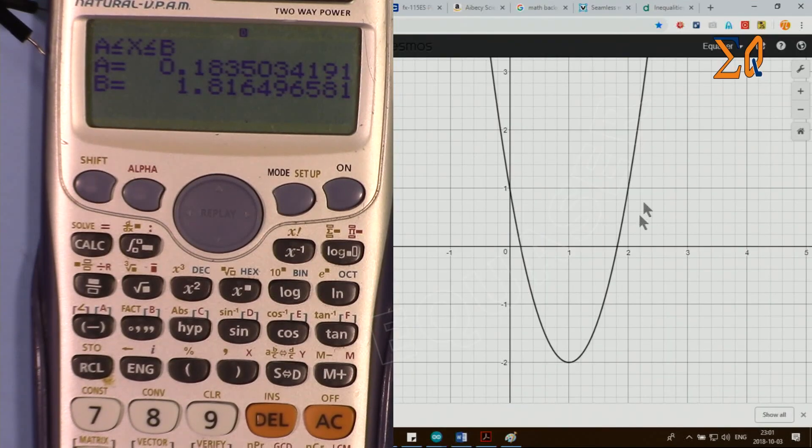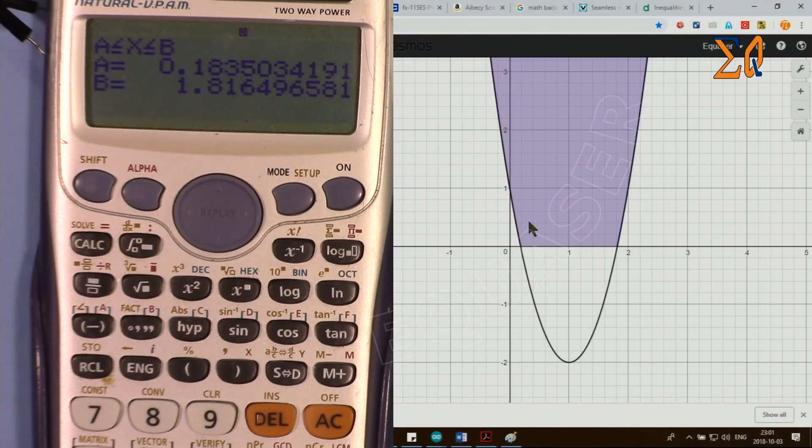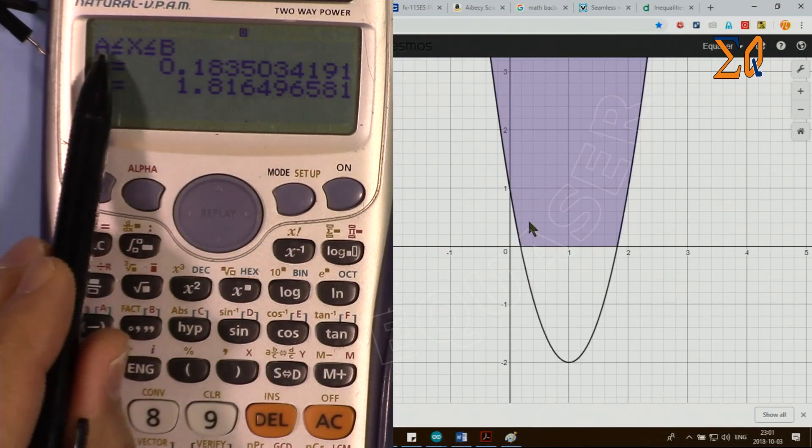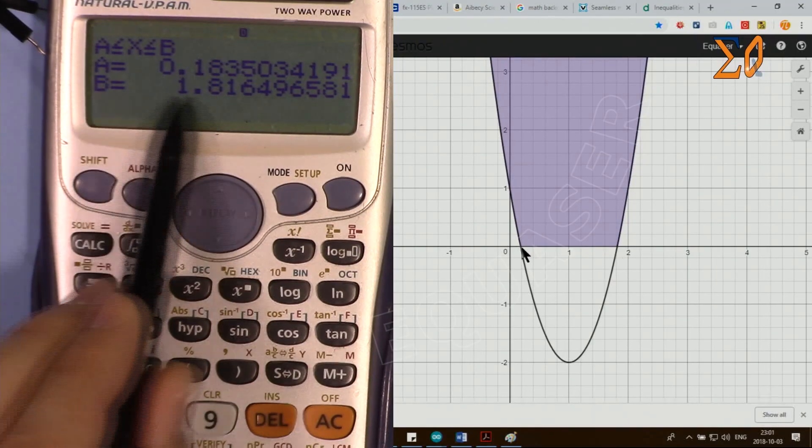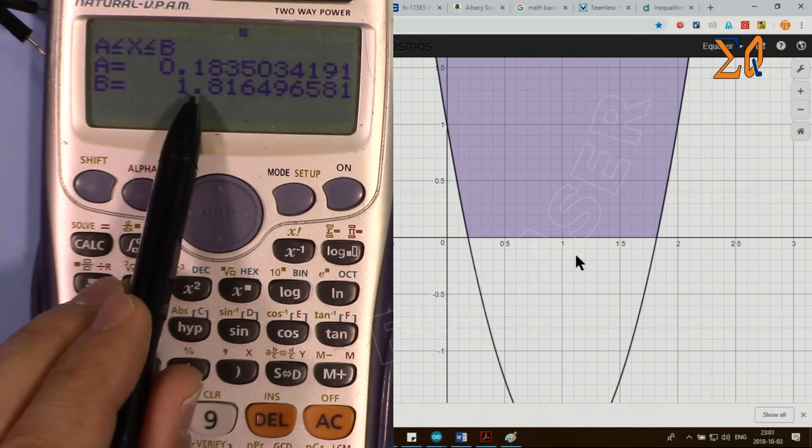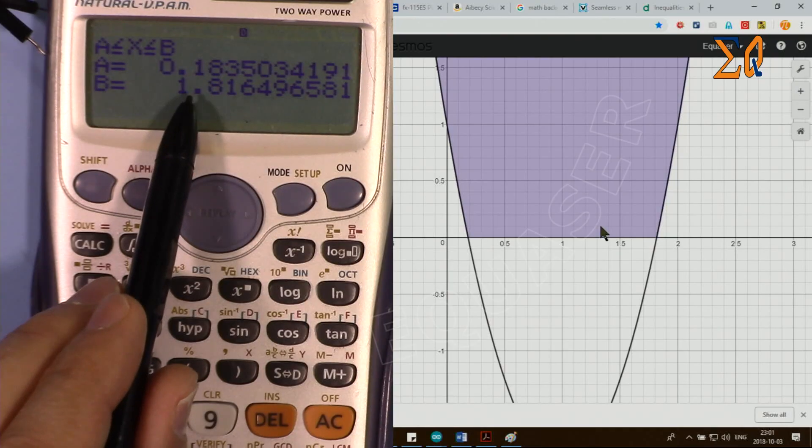This is our main plot, and here if we show the region we see that x is between a and b, x is between 0.18 and 1.8, so between these two regions.